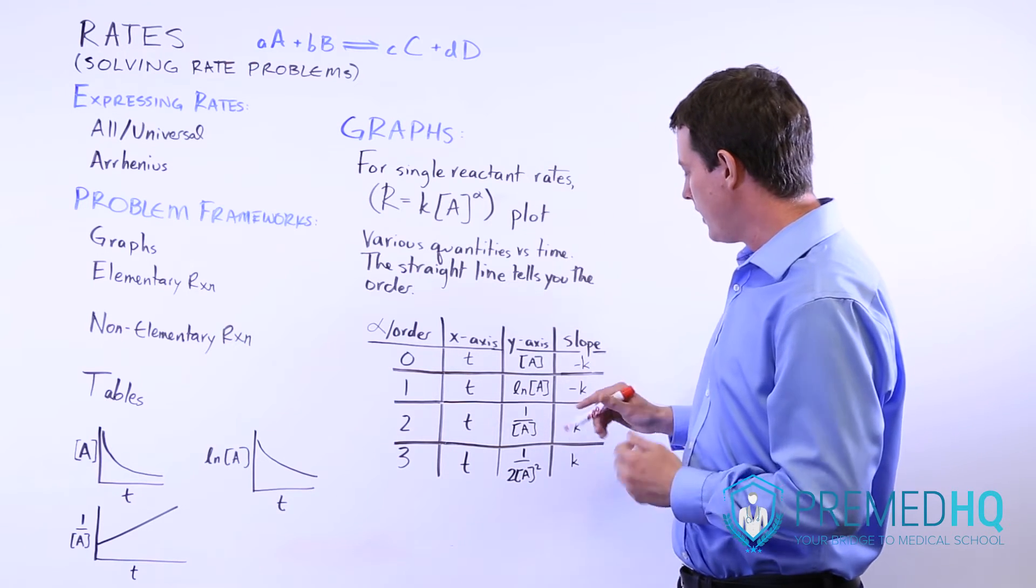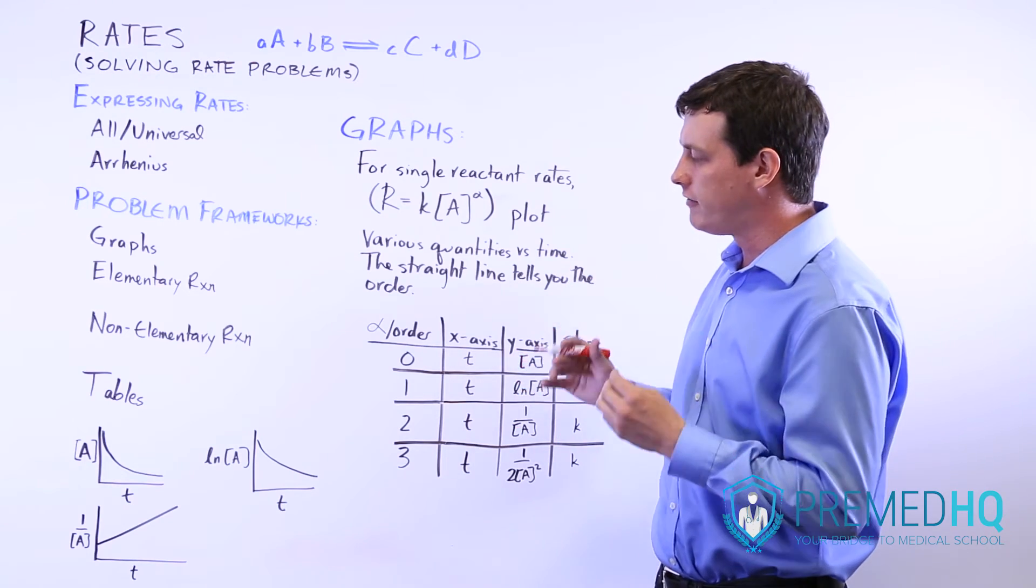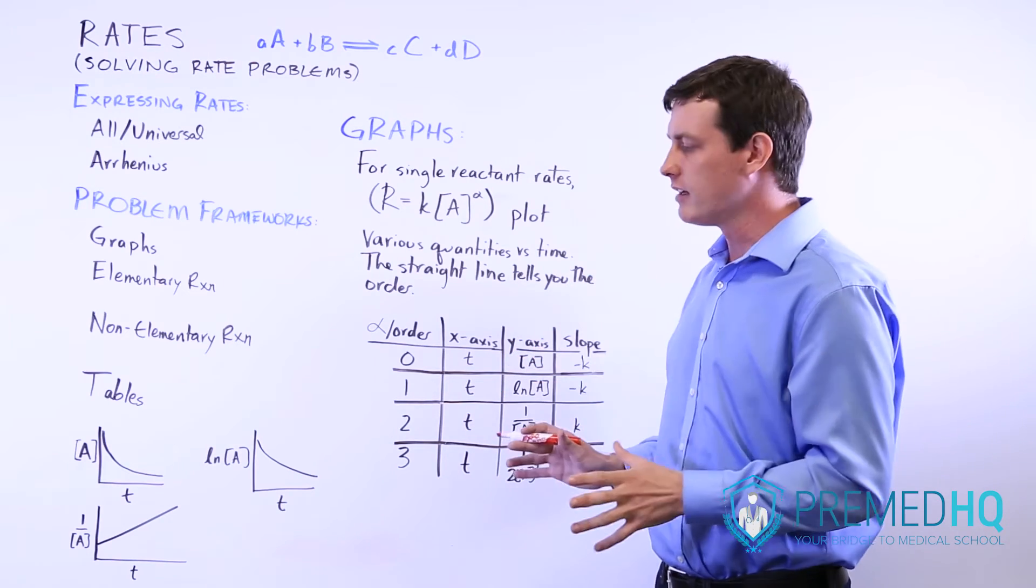And the slope being positive k, that is a way of expressing this information in linear form.